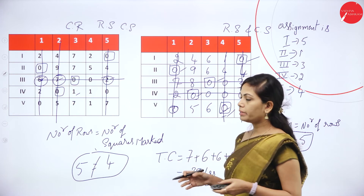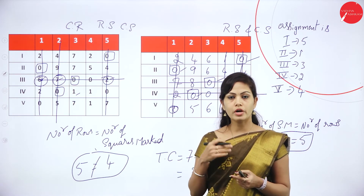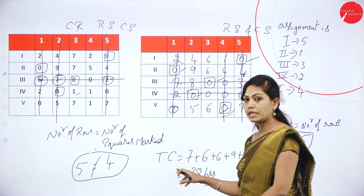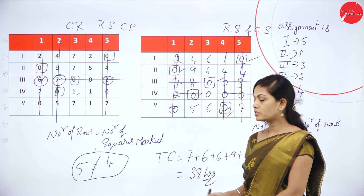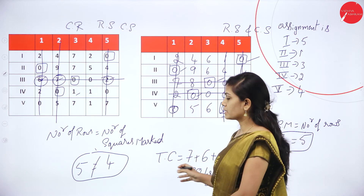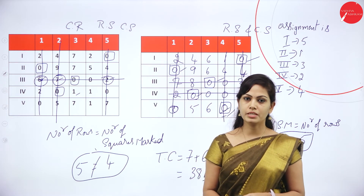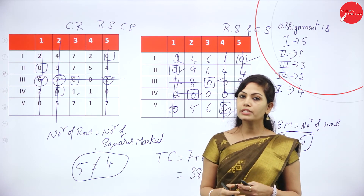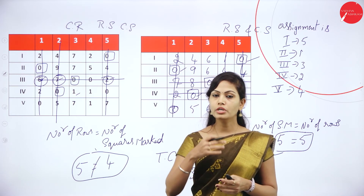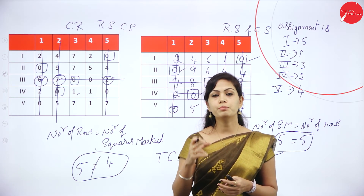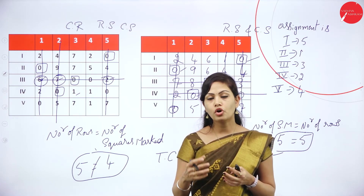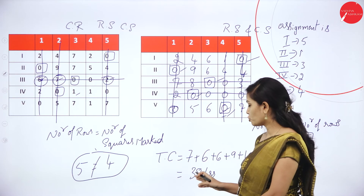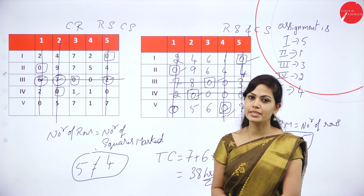In the question they will mention the table and whether it is in hours, rupees, or some other unit. The total processing time is 38 hours; if it is in rupees the total cost is 38 rupees. This is your assignment problem solved by using the Hungarian method. First do row reduction, column reduction, then row scanning and column scanning. If you get one 0, put a square box and a vertical line; if you get two 0s, skip that row or column, and finally find the optimal solution.